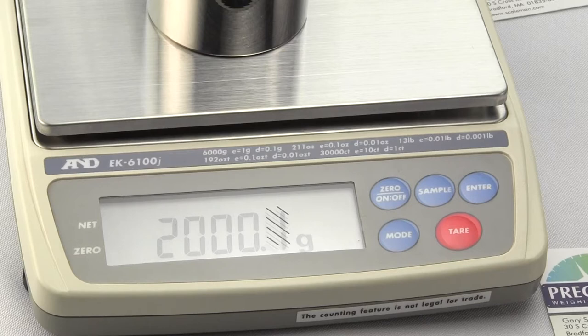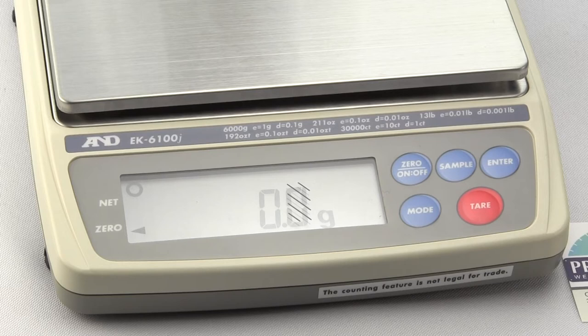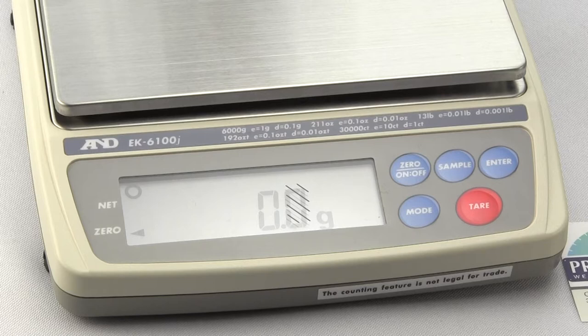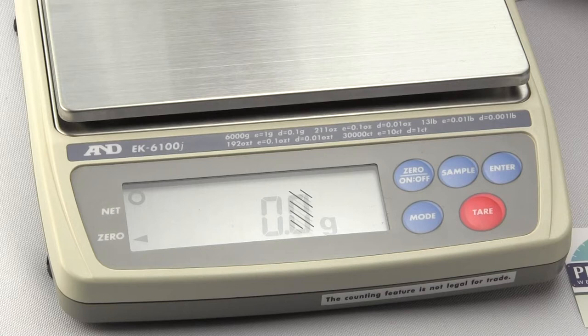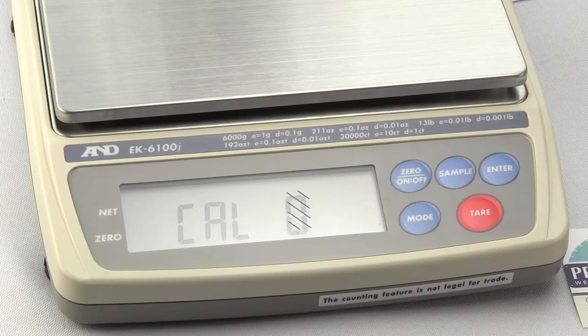Now, one of the nice things about the EKJ series is the calibration weight is user selectable. It's always best to at least calibrate with 50% of the capacity. I'd really recommend that people calibrate the scale with a 5 kg weight. But a 5 kg weight is pretty expensive. So we can go into the CAL mode and I'll show you how to change it. And we'll just say we'll use a 2 kg mass to calibrate.